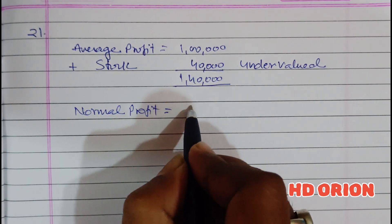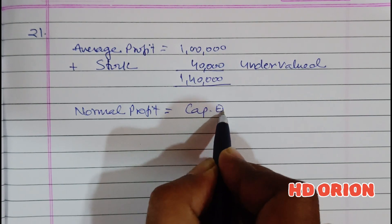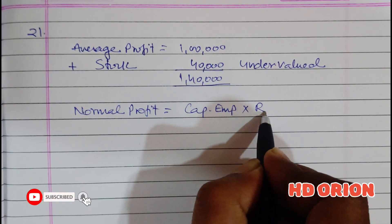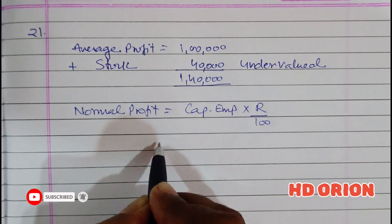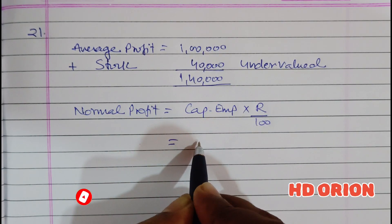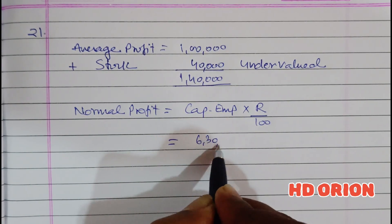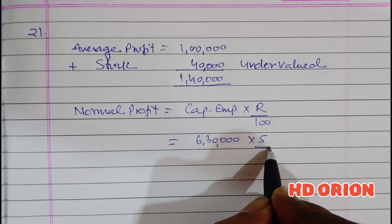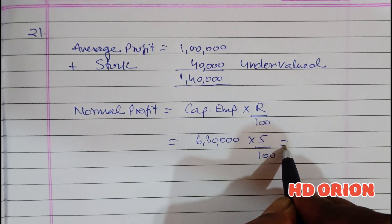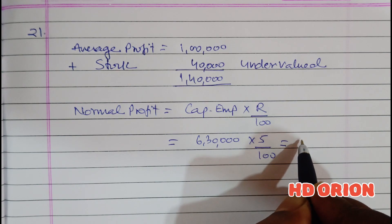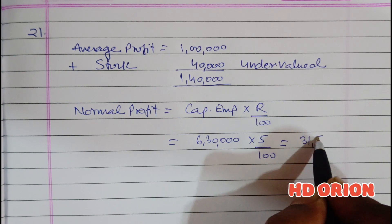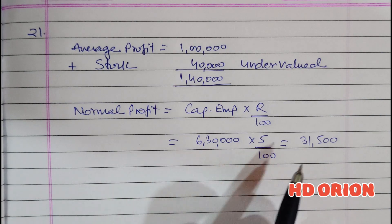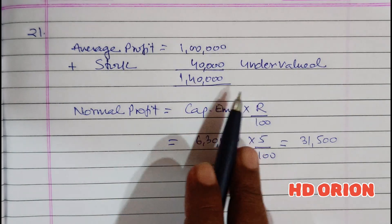Normal profit is equal to capital employed multiplied by rate. Capital employed is given as ₹6 lakh 30,000, and the rate of return is 5%. So our normal profit is ₹31,500.